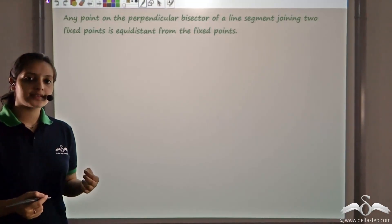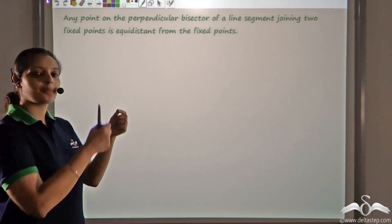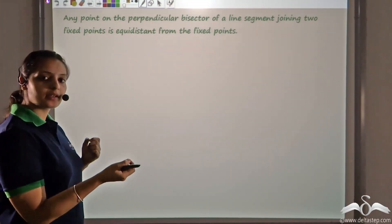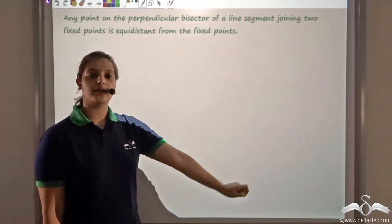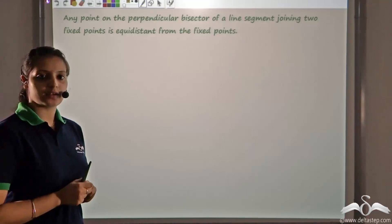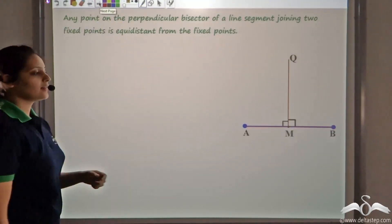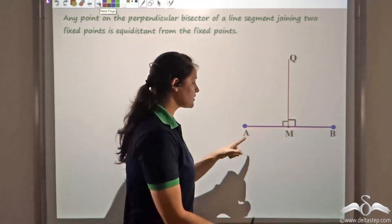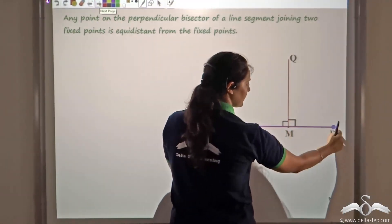Now, let us try to prove this. That is, if there is a point that lies on the perpendicular bisector of a line segment joining two fixed points, then that point would be equidistant from the two fixed points. Let us look at this. Let us say we have these two fixed points as A and B. This is the line segment joining A and B, line segment AB.